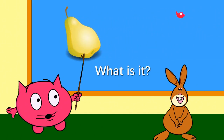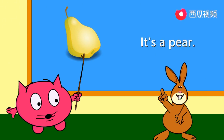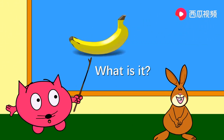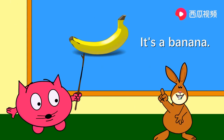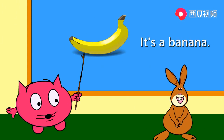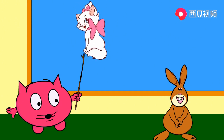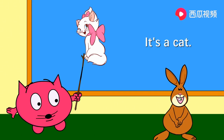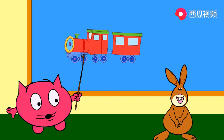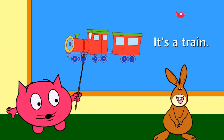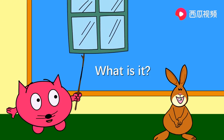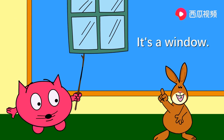What is it? It's a pear. What is it? It's a banana. What is it? It's a cat. What is it? It's a train. What is it? It's a window.